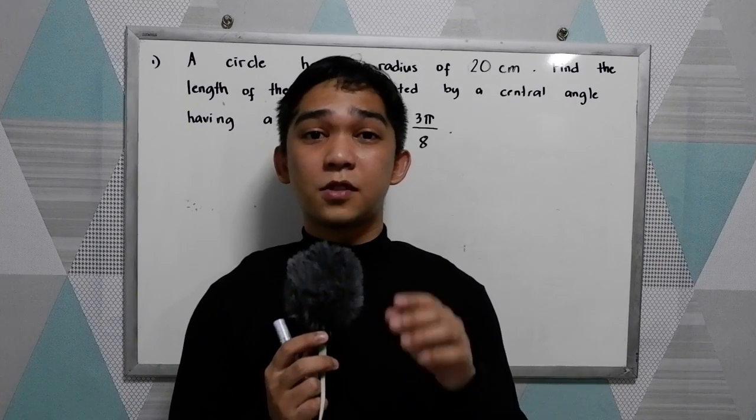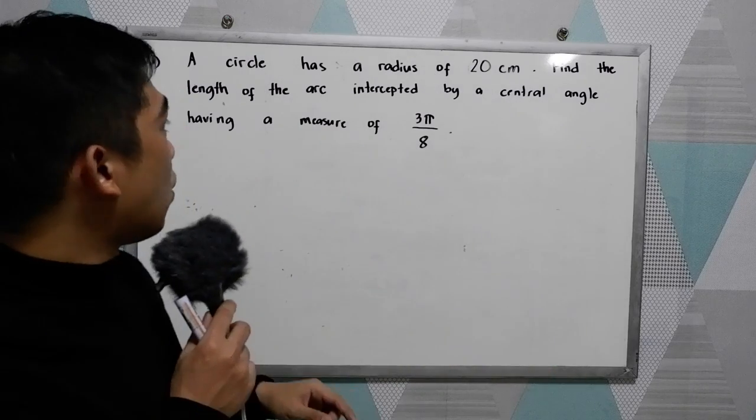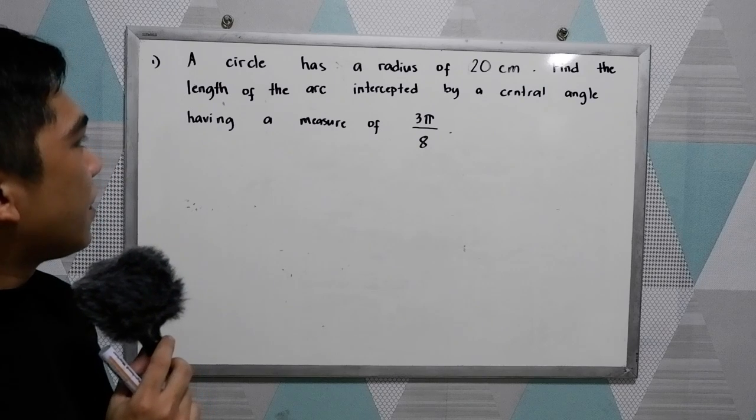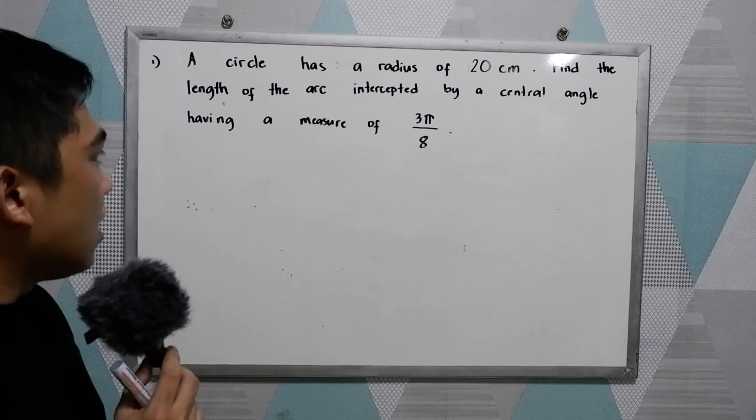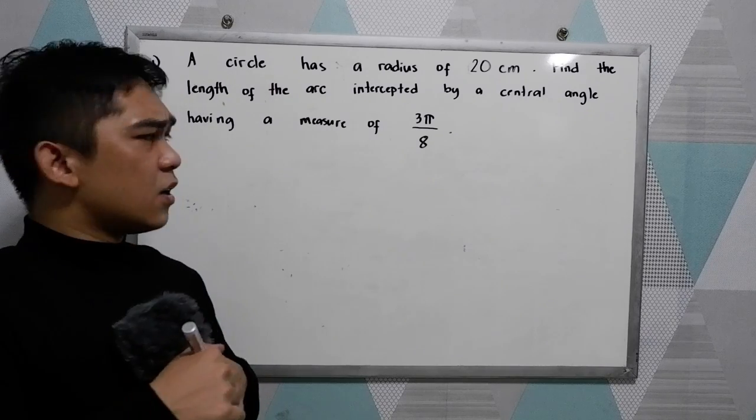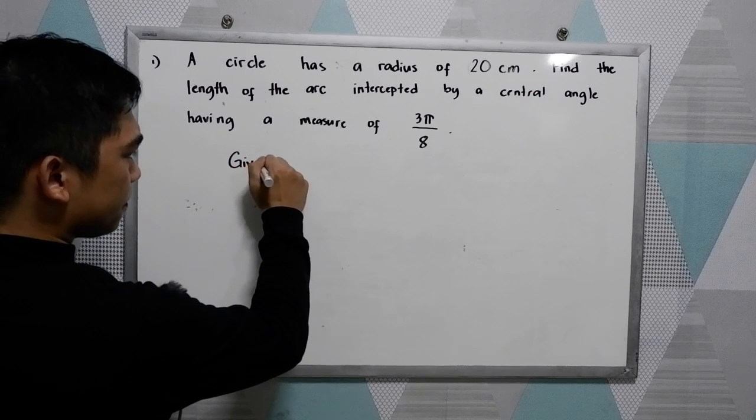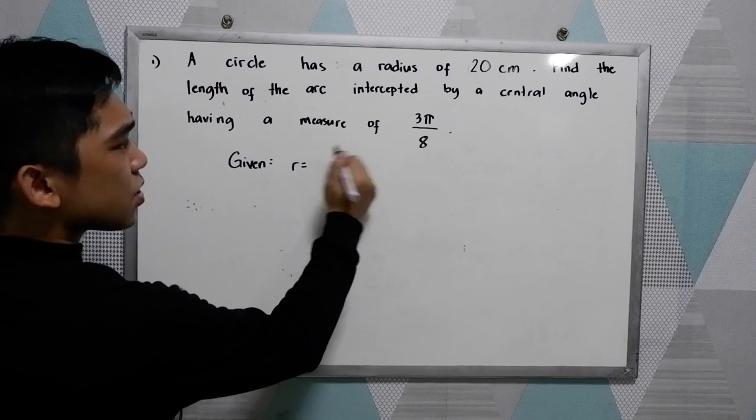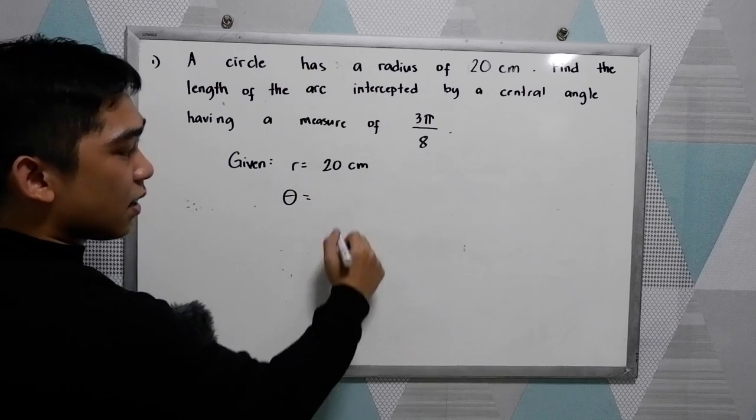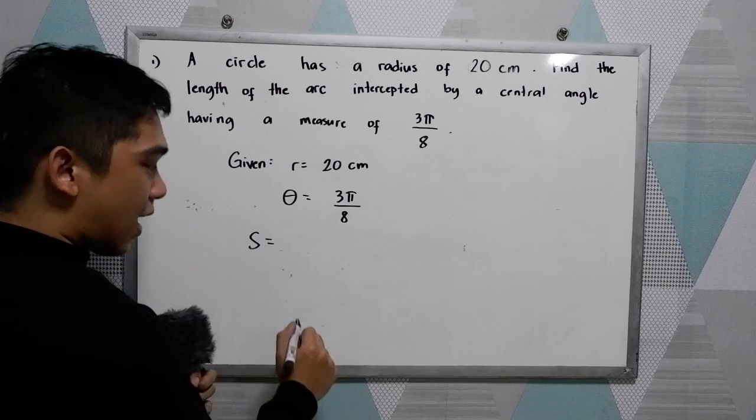Now let's try to solve some problems regarding our topic, the arc length. Let's have our problem number one. A circle has a radius of 20 centimeters. Find the length of the arc intercepted by a central angle having a measure of 3 pi over 8. First step, write all the given first. So given, we have the radius 20 centimeters and our central angle 3 pi over 8. We're going to find the arc length.